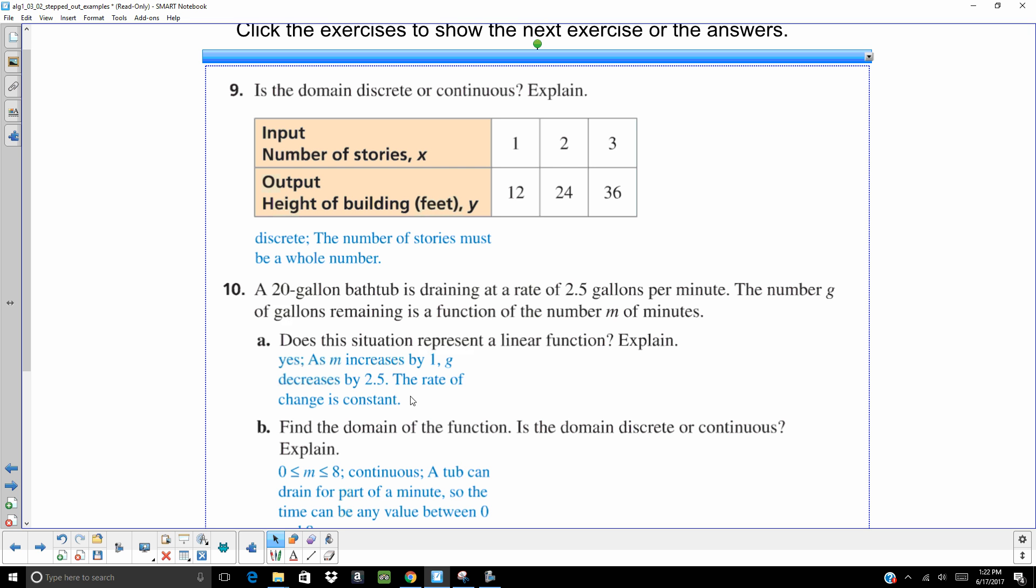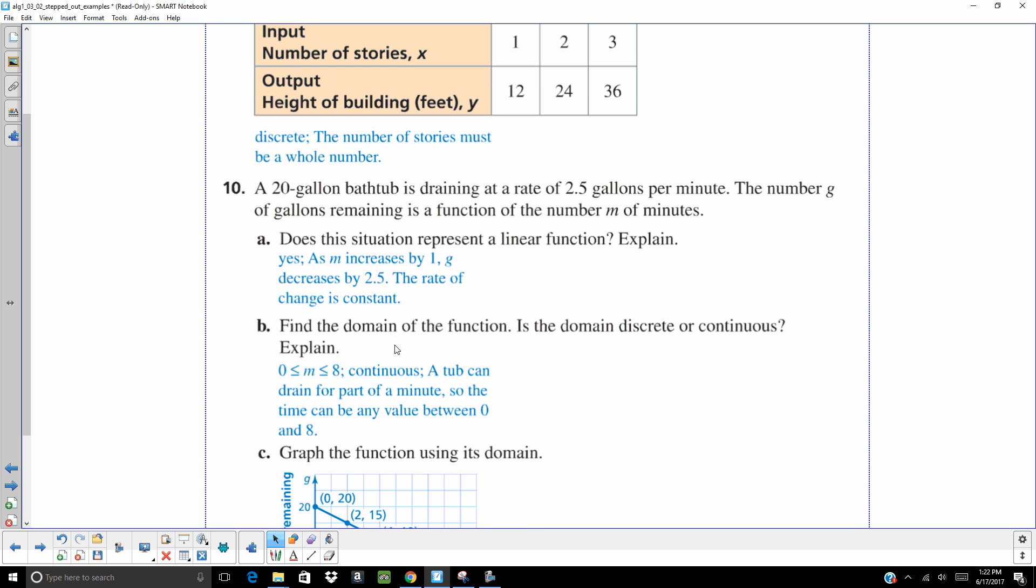It is a linear function. The rate of change is constant. It's going down by 2.5 gallons per minute. Whenever you see per, it's usually a keyword that that's a rate of change. And that's going to be a constant number. So find the domain. This is going to be continuous because it's continuously draining for a part of a minute. It doesn't just drain all of it at minute one, all of it at minute two, all of it at minute three. You can have parts of a minute. So this one's going to be continuous.